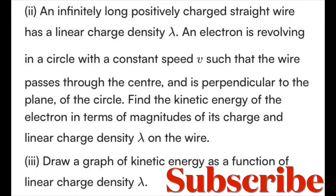An infinitely long positively charged straight wire has a linear charge density lambda. An electron is revolving in a circle with a constant speed v such that the wire passes through the center and is perpendicular to the plane of the circle. Find the kinetic energy of the electron in terms of the magnitudes of its charge and the linear charge density lambda on the wire.